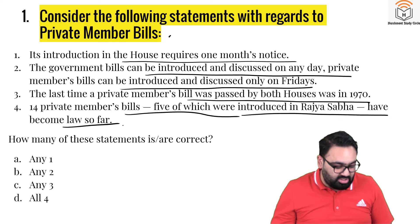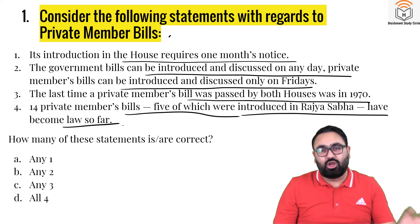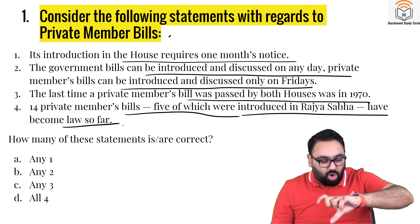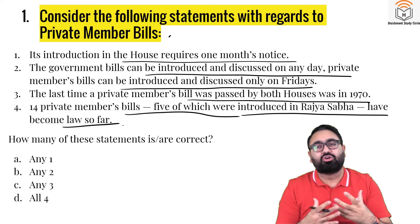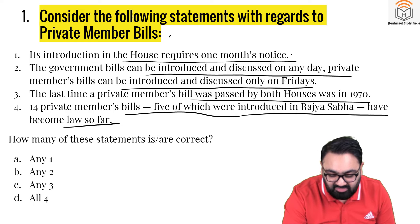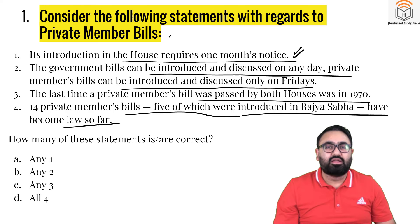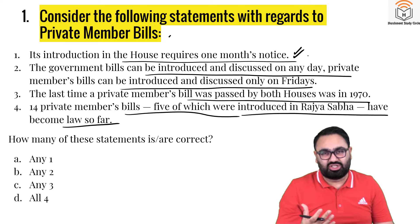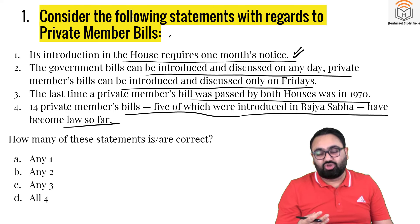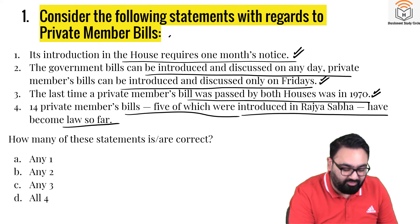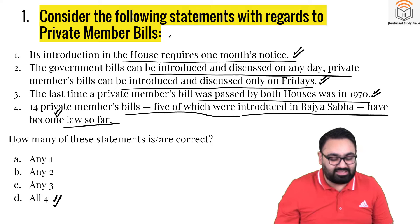How many of these are correct? Now, you would have read about private member bills — any bill introduced by a non-minister is a private member bill. Usually when we read about them, the only thing covered is what they are and how many have passed, which is 14. This question is slightly tricky because it asks for more details, like the timeline and when they can be introduced. Statement one — it requires one month's notice — is true. Only Fridays are available for introduction, and that is why the last of these bills was passed in 1970 out of all 14. So all four statements are correct. The answer is D — all four are correct regarding private member bills.